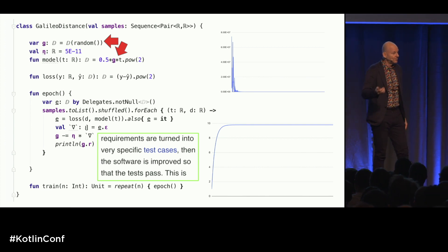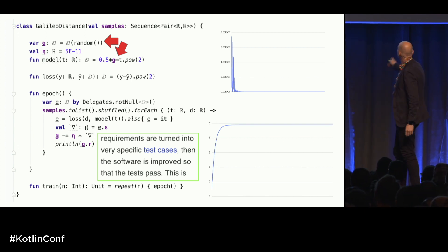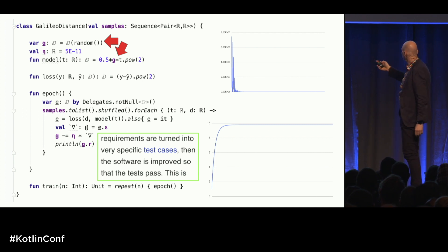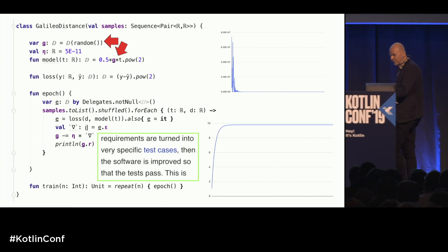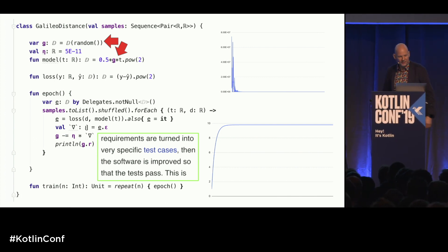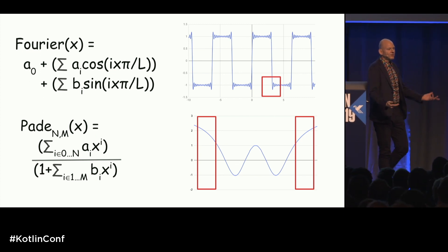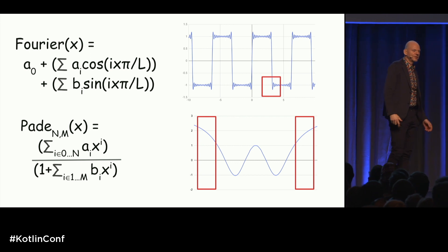What I'm going to tell you in the rest of the talk is how to implement this magic type D that allows you to take derivatives easily, and then do arbitrary machine learning in this way. But let's first look at some other examples where people do function approximation.